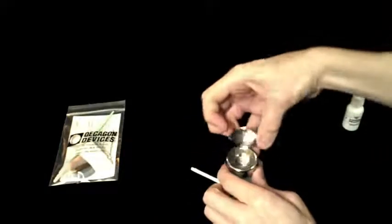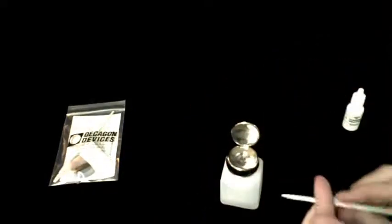Next, discard the old kimwipe strip and attach a new one to the plastic rod. This time, however, dampen the kimwipe using distilled water instead of the Decagon cleaning solution. Distilled water rinses away any residual contamination that may be left on the sensor block.